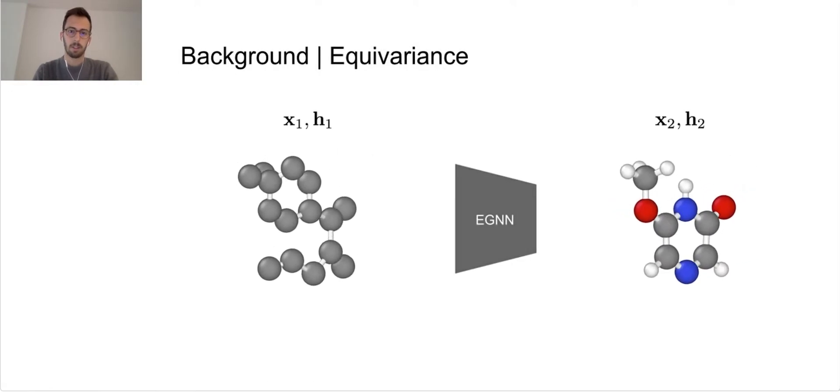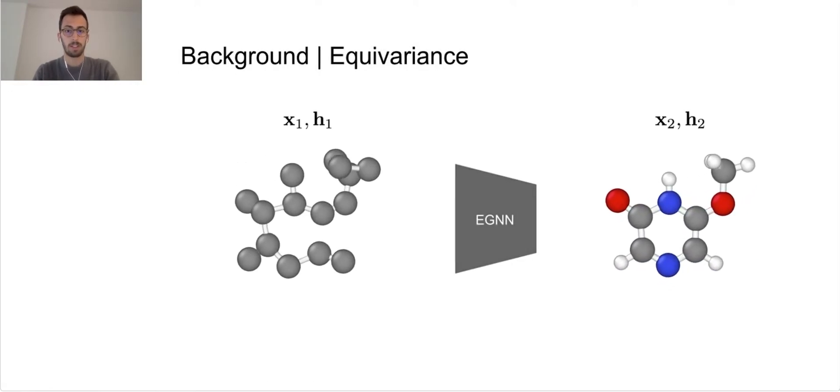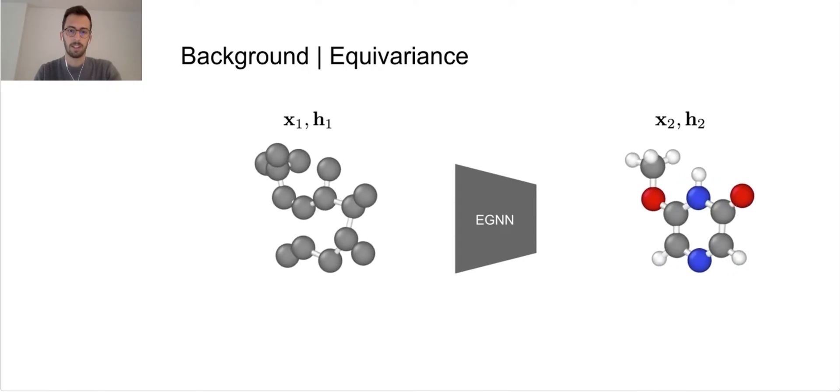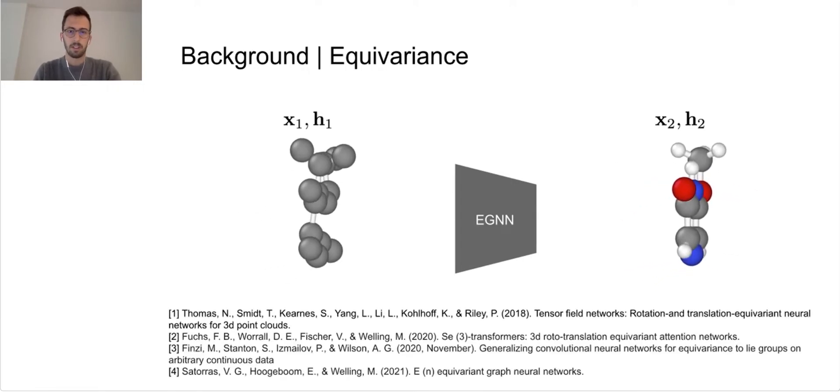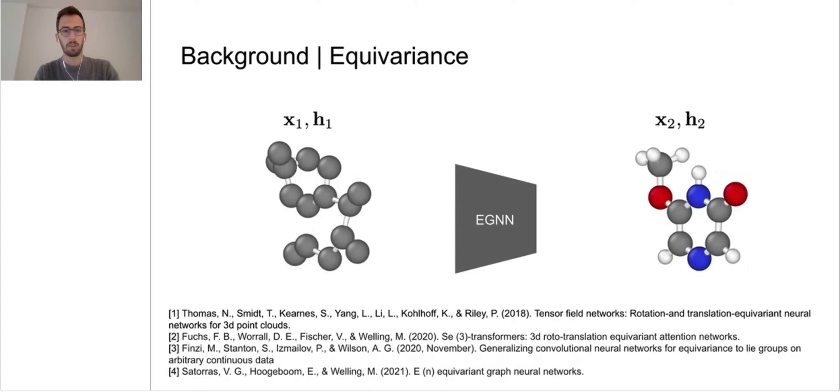We can define these point clouds or molecules as a set of node coordinates x and node features h. Under this notation, different translation and rotation equivariant networks have been lately proposed. In this project, we choose to use the E(n) Equivariant Graph Neural Network to build our generative model because of its efficiency and cheap computation.